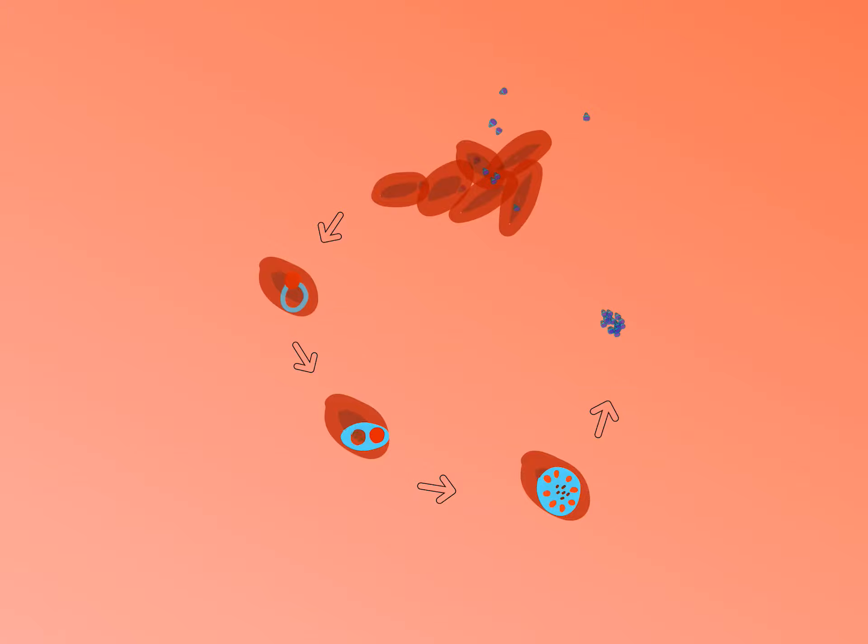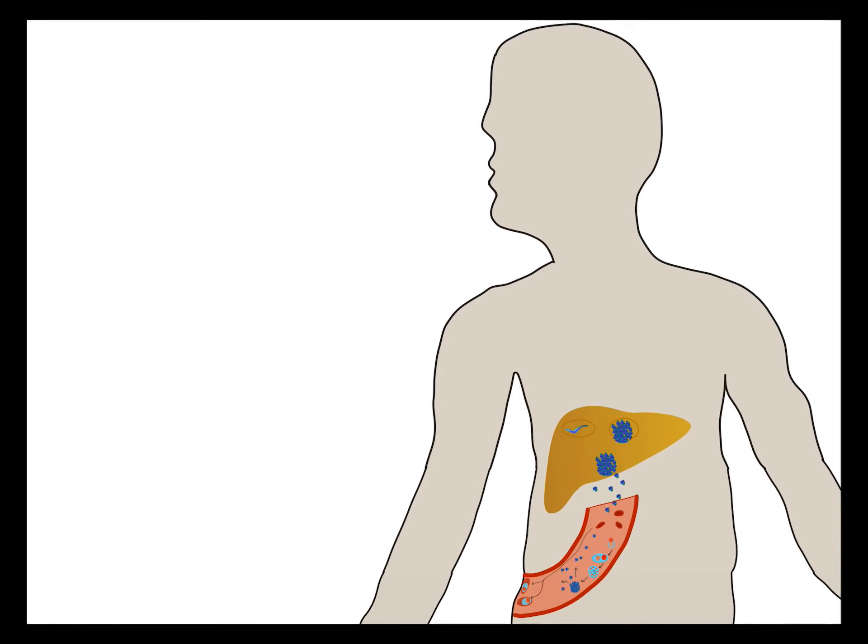This erythrocytic cycle repeats itself approximately every 48 to 72 hours. Some of the infected erythrocytes leave this asexual cycle; instead, merozoites in these cells develop into sexual forms of parasite called gametocytes that circulate in bloodstream.